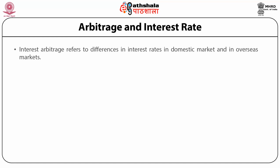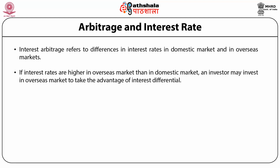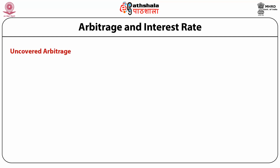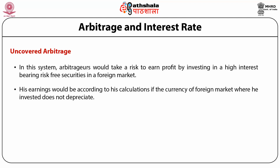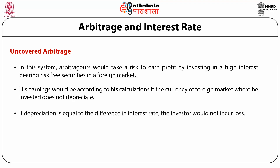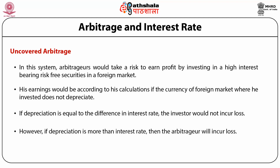Arbitrage and interest rates: interest arbitrage refers to differences in interest rates in the domestic market and overseas markets. If interest rates are higher in the overseas market than in the domestic market, an investor may invest in the overseas market to take advantage of the interest differential. Interest arbitrage may be covered or uncovered. In uncovered arbitrage, the arbitrager takes a risk to earn profit by investing in high interest-bearing risk-free securities in the foreign market. His earnings depend on whether the currency of the foreign market does not depreciate. If depreciation equals the difference in the interest rate, the investor incurs no losses; however, if depreciation is more than the interest rate, the arbitrager will incur losses.